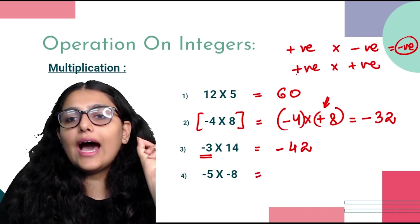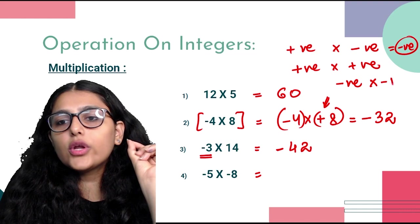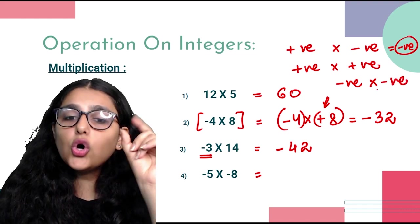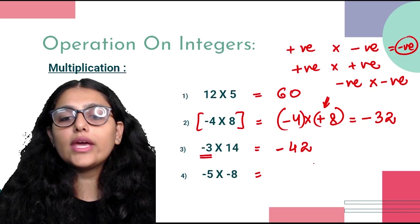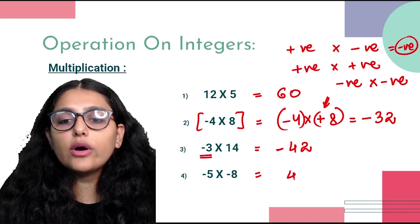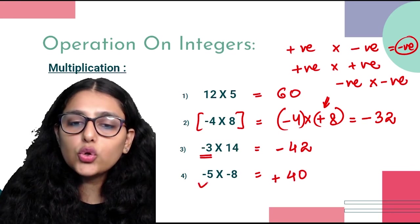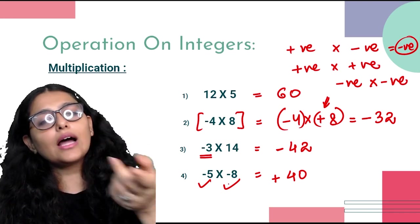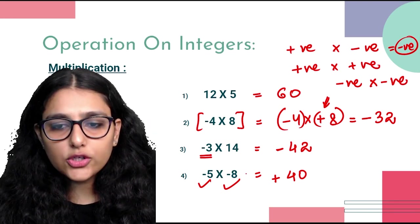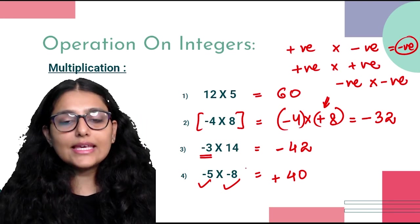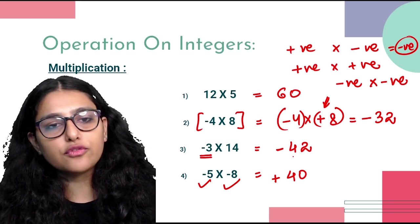When both signs are negative — for example minus 8 × minus 5 — two negatives make a positive. So 8 × 5 = 40, and the answer is plus 40. Rule: if both signs are negative, the answer is positive; if there is even one negative sign in multiplication or division, the answer is negative.